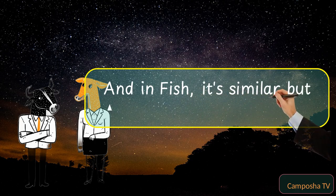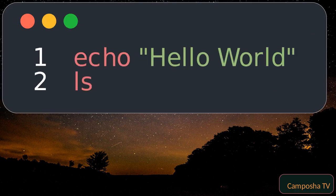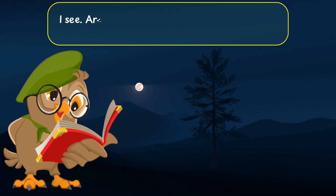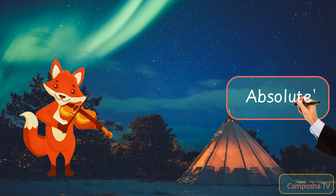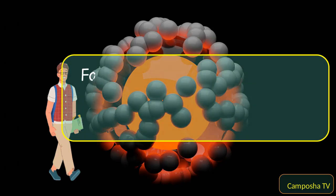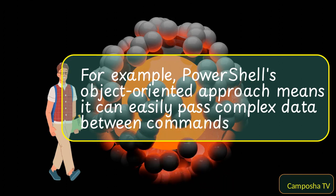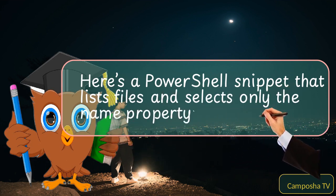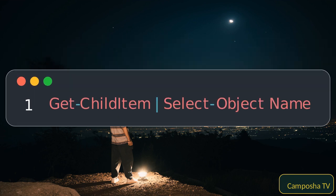And in Fish, it's similar but with some syntax differences. For example, PowerShell's object-oriented approach means it can easily pass complex data between commands. Here's a PowerShell snippet that lists files and selects only the name property. This is not as straightforward in Bash, ZSH, or Fish, which are more text-based.